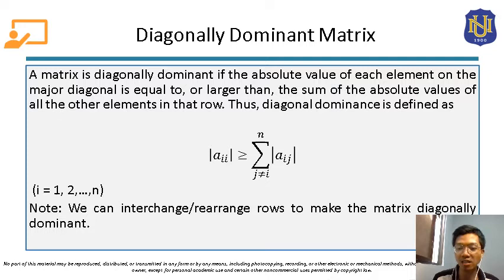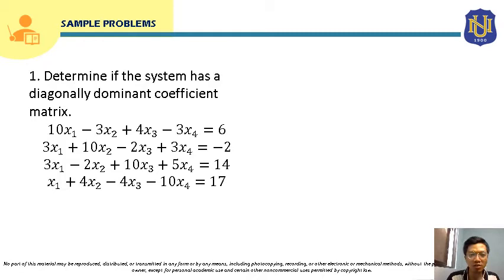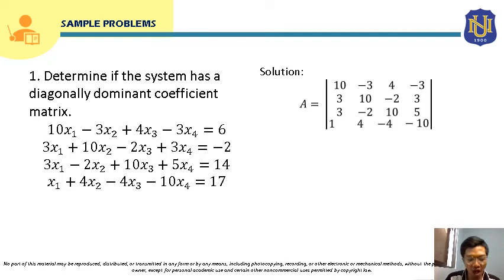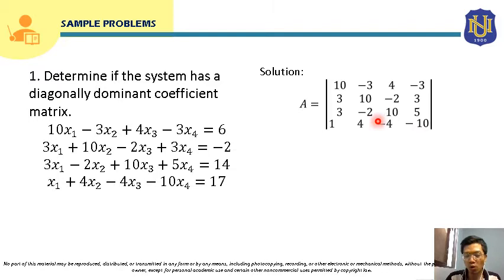Let's solve this example: determine if the system has a diagonally dominant coefficient matrix. We write the coefficient matrix A from the given system. The coefficients are: row 1: 10, −3, 4, −3; row 2: 3, 10, −2, 3; row 3: 3, −2, 10, 5; row 4: 1, 4, −4, −10. We will now check if this coefficient matrix is diagonally dominant.